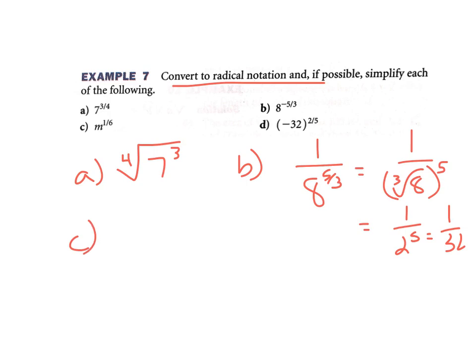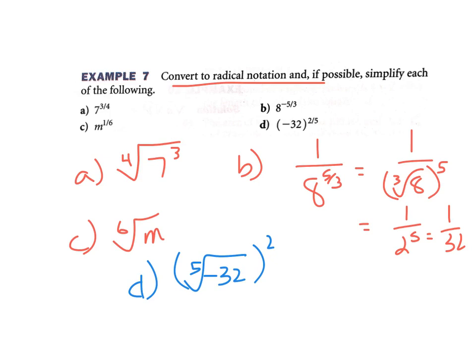Part D: the fifth root of negative 32 squared, written as negative 32 to the two-fifths. I like to do the root first because that makes the number smaller. The fifth root of negative 32 is negative 2, and I'm going to square that, which gives me 4. So be careful there.